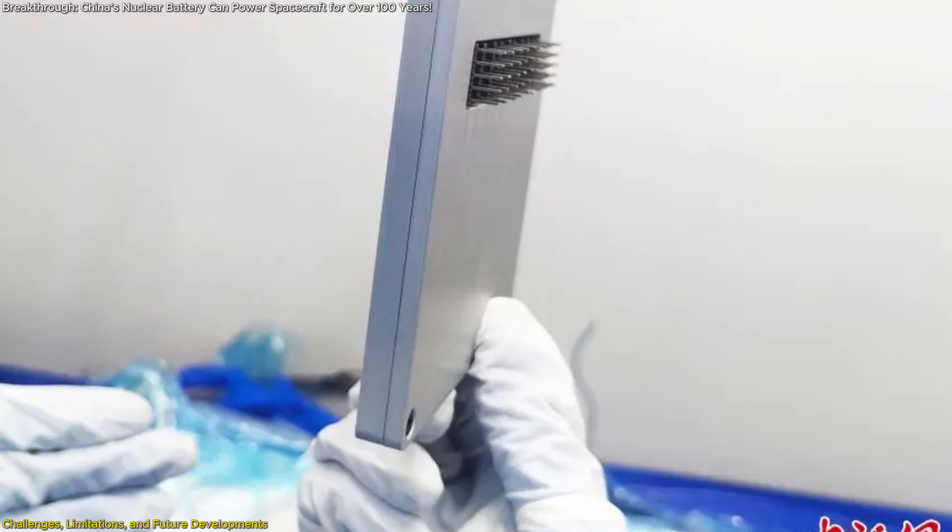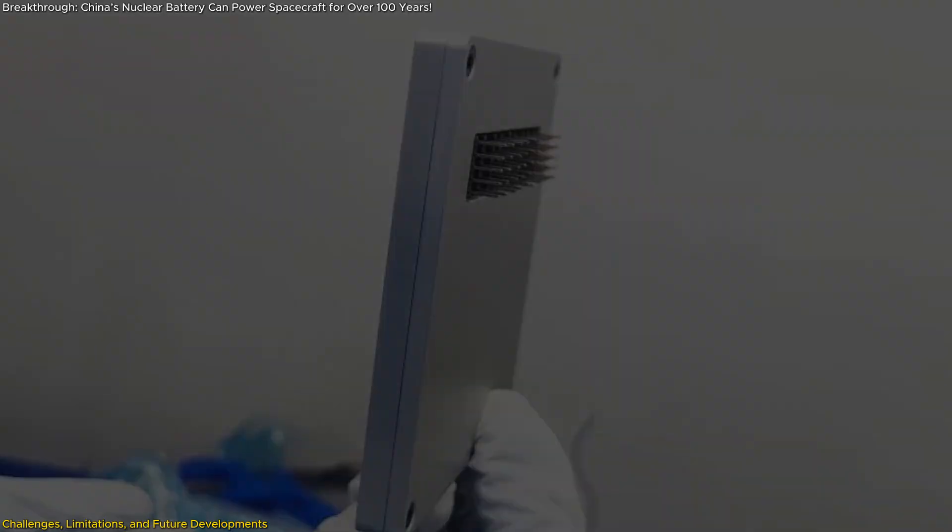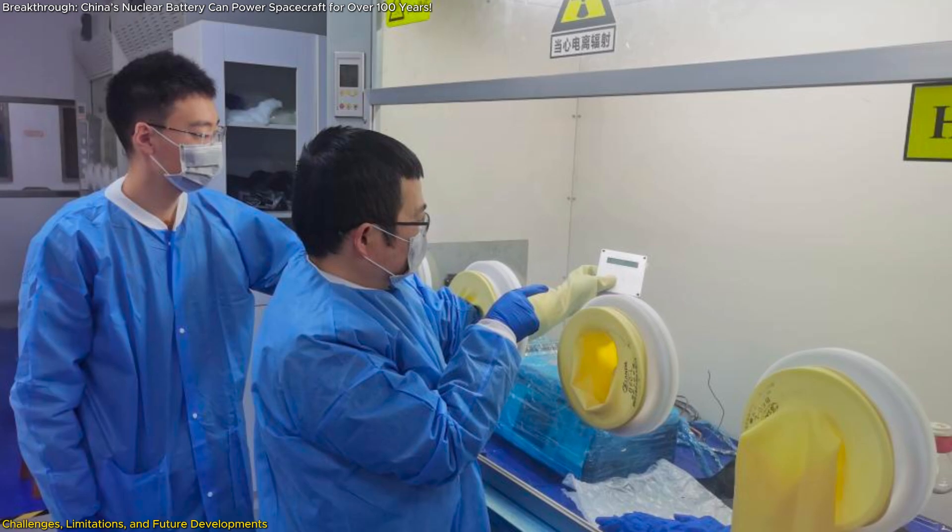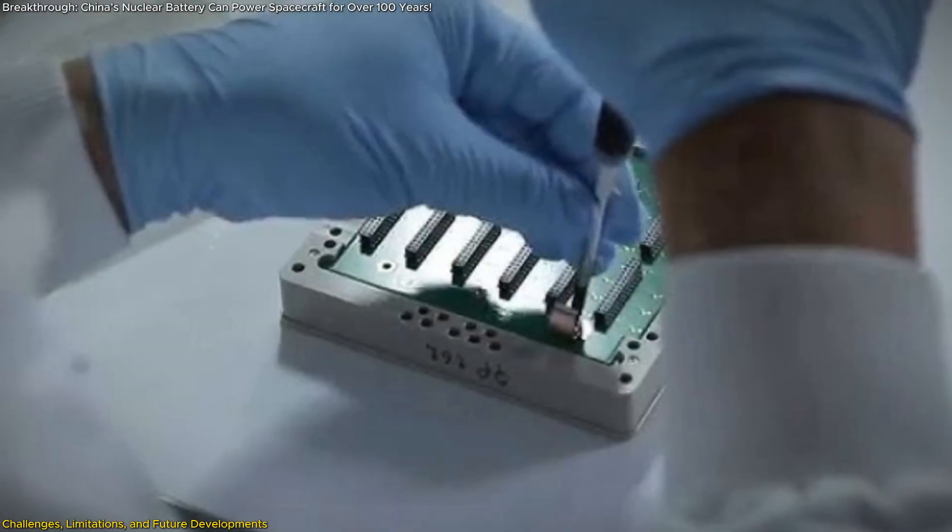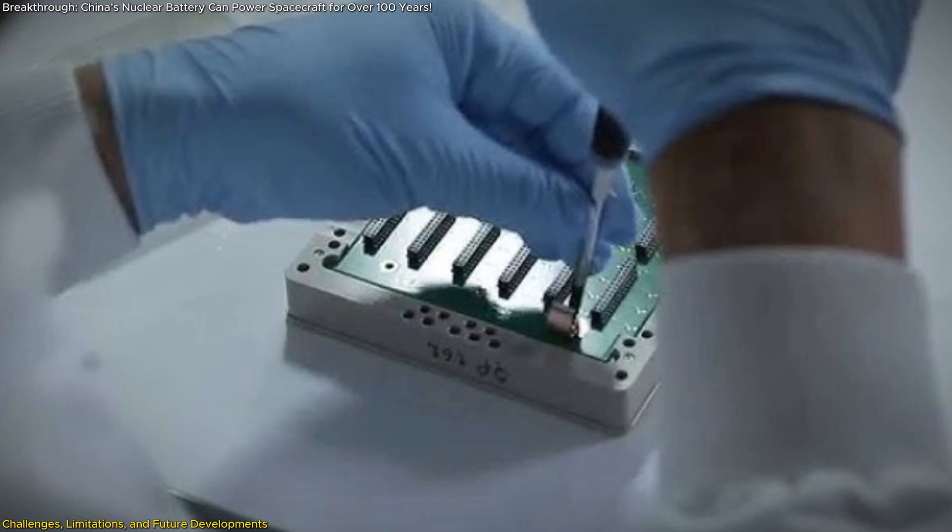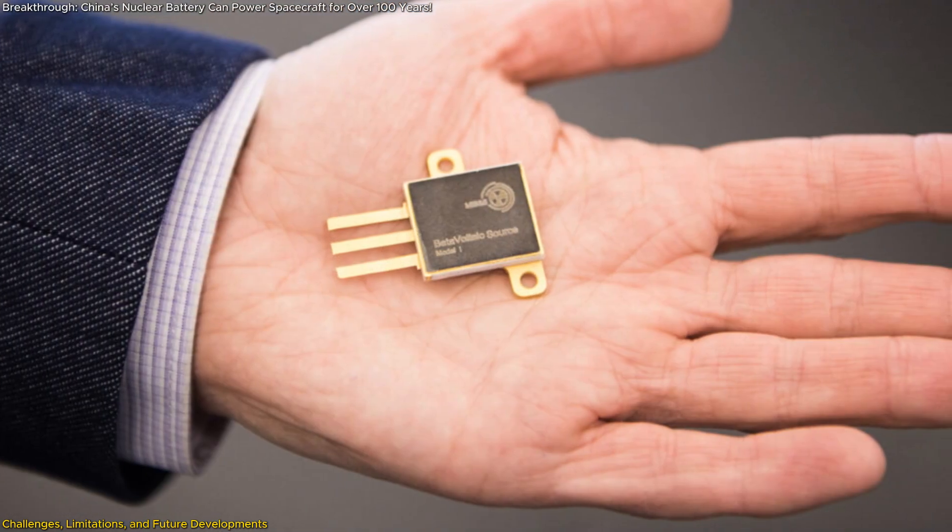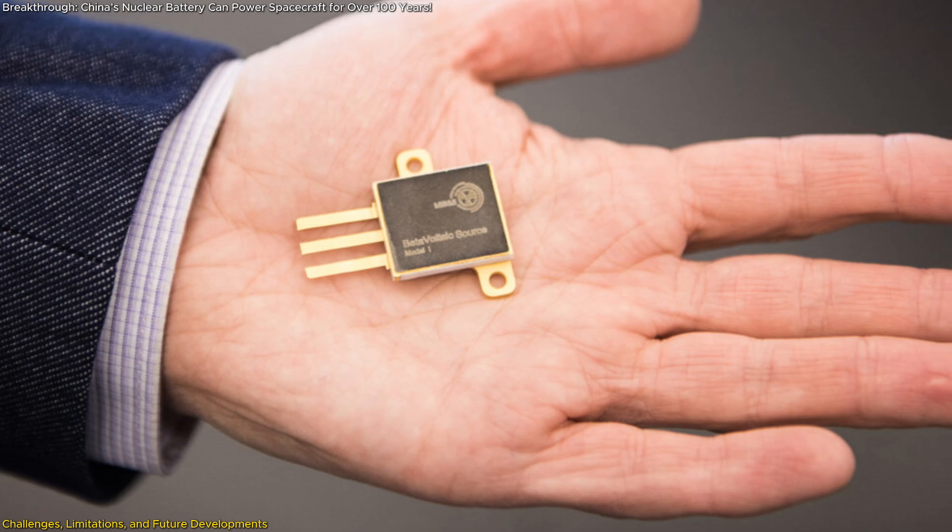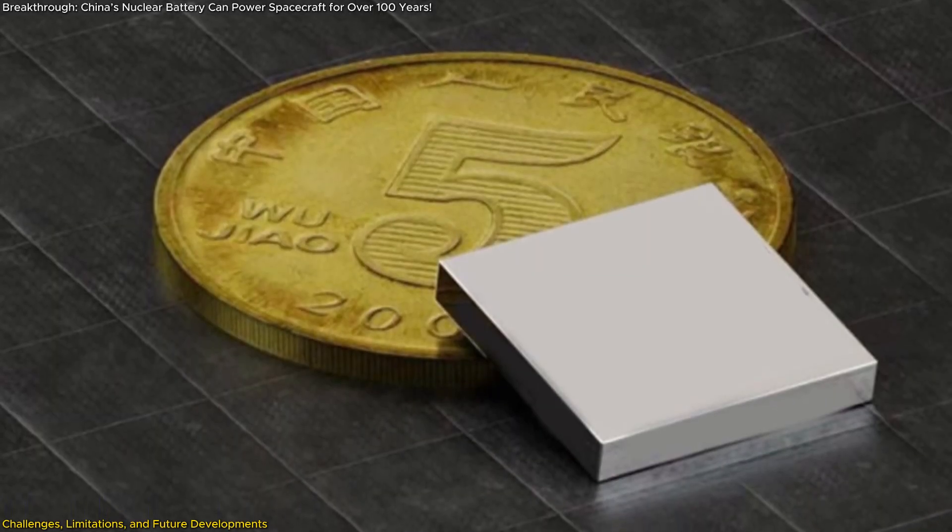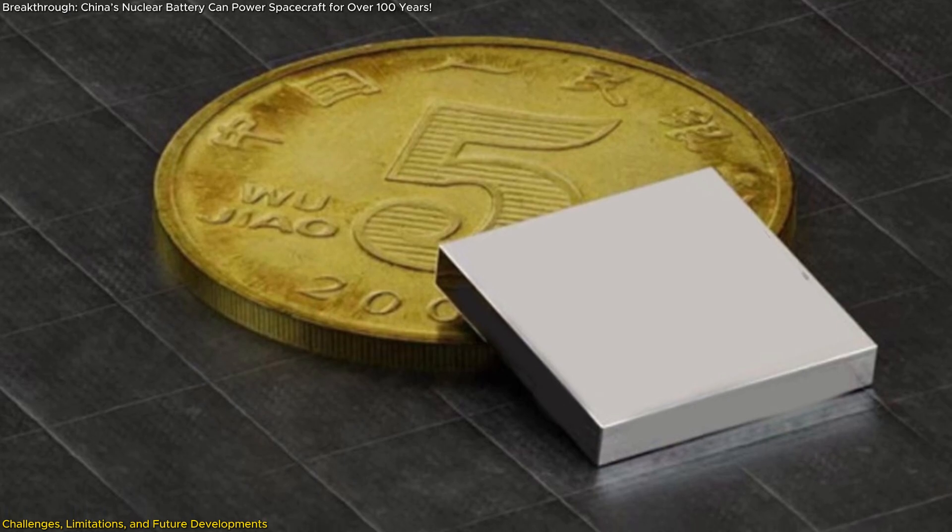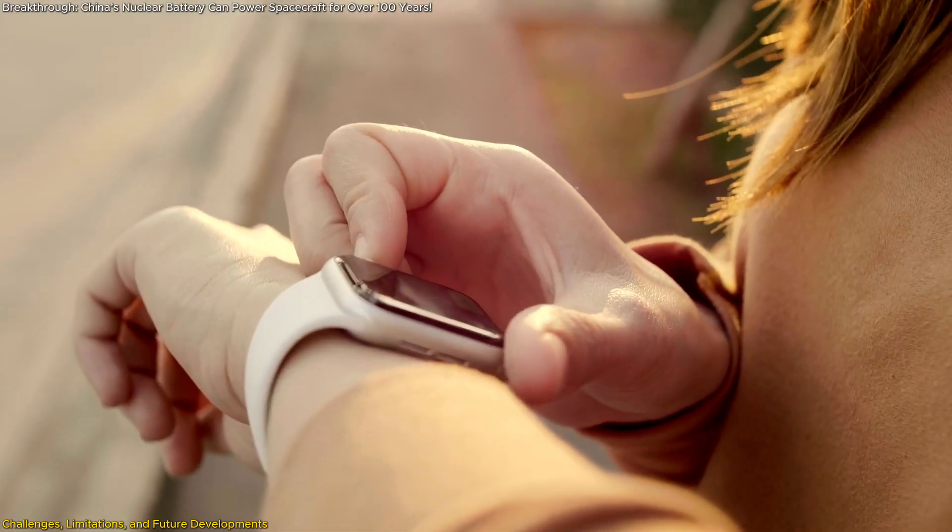The developers behind Zhulong-1 are not stopping here. The next iteration, Zhulong-2, is already in development and expected to be released by the end of the year or early next year. The goal? Make the battery smaller, cheaper, and even more efficient. Zhulong-2 will reportedly be coin-sized, potentially unlocking even more applications, especially in wearable tech and consumer electronics.